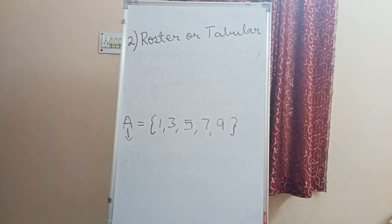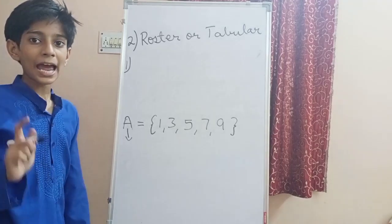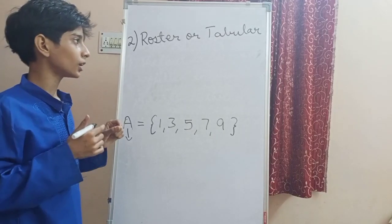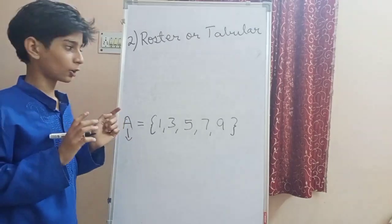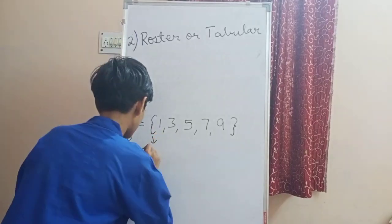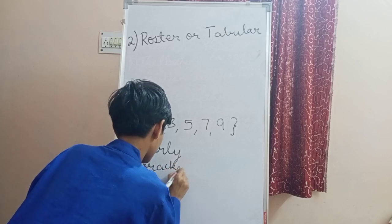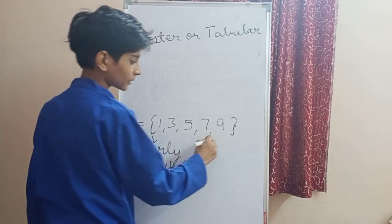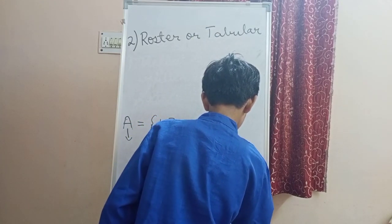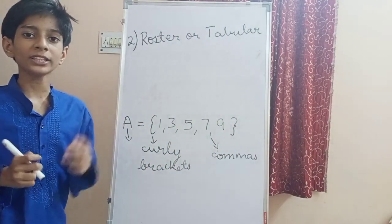The second rule is that the elements are always written inside curly brackets and are separated by commas. The elements are inside the pair of curly brackets and each number is separated by commas.